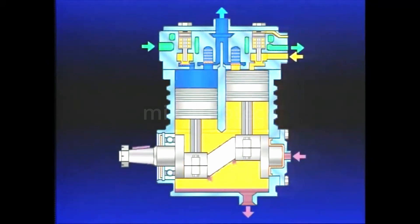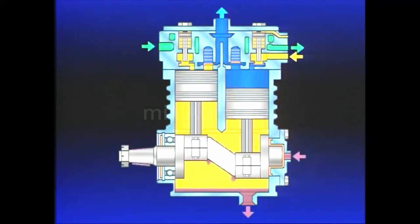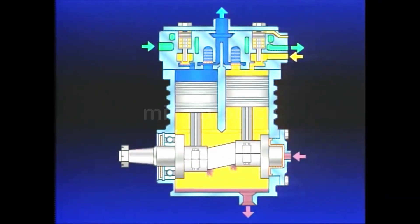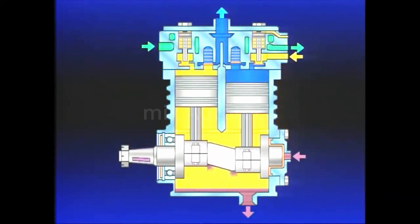The compressor crankshaft and connecting rods convert the rotational force of the engine to a vertical linear force in the compressor pistons.